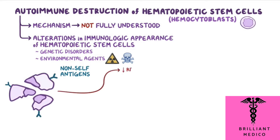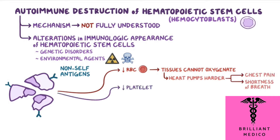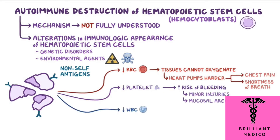As the immune system destroys hematopoietic stem cells, a whole host of complications arise. Due to the low red blood cell count, tissues cannot properly oxygenate, so the heart pumps harder to circulate the red blood cells, leading to chest pain and shortness of breath. Low platelet count leads to an increased risk of bleeding from the most minor injuries and endomucosal areas. Low white blood cell counts lead to the body's inability to fight off common infections that can lead to sepsis.